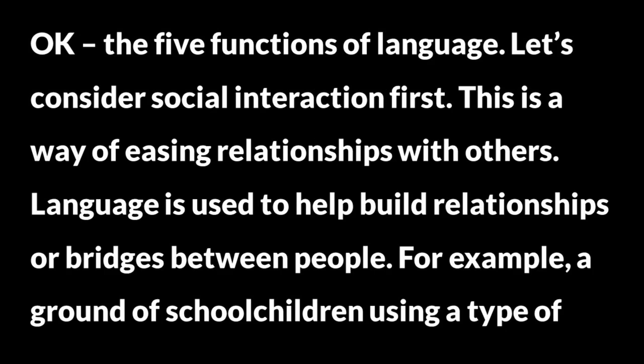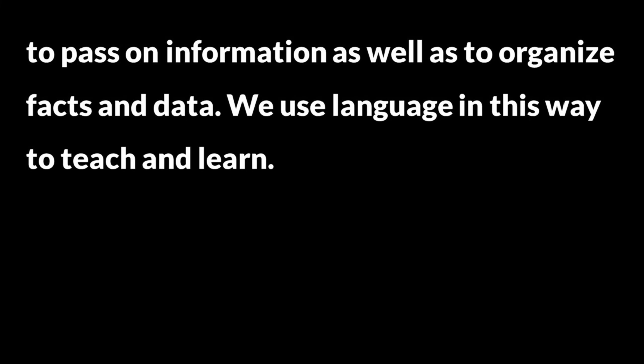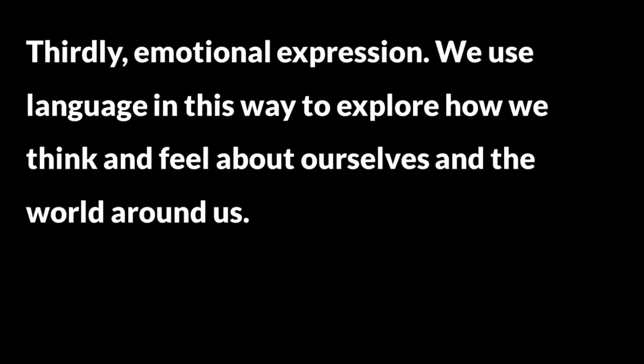The five functions of language. Now let's consider social interaction first. This is a way of easing relationships with others. Language is used to help build relationships or bridges between people. For example, a group of school children using a type of slang common to young people might be building friendships within their group. Secondly, recording of facts — this is information stored for future use. Such stored facts are necessary for the development of society. They help us to pass on information as well as to organize facts and data. We use language in this way to teach and learn. Thirdly, emotional expression: we use language in this way to explore how we think and feel about ourselves and the world around us.